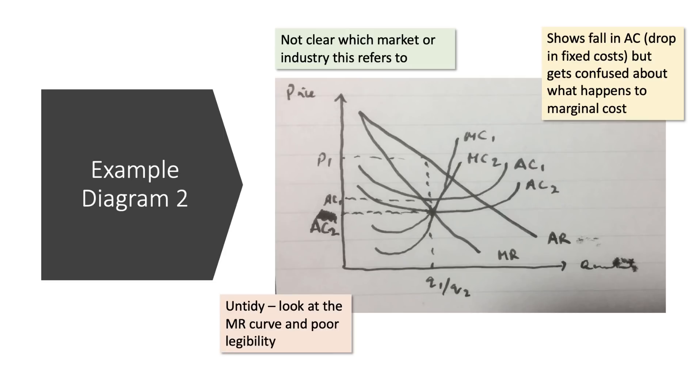This diagram looks a little bit more sophisticated. The student here is trying to show how a fall in fixed costs draws the average cost down from AC1 to AC2 and increases the profit the firm is making. But there's some confusion here with marginal costs. You need to draw your marginal and your average costs in the right way. Marginal cutting average at the minimum point. A fall in fixed costs has no effect on marginal costs. It's an untidy diagram. Look at the marginal revenue curve. Very untidy. Hand-drawn. No ruler. It's not clear which market or industry this diagram refers to. Contextualise your diagrams as best you can. Overall legibility is pretty poor. Look at quantity on the x-axis there. So a rather scrappy diagram. It could really be improved a lot with some care and attention.